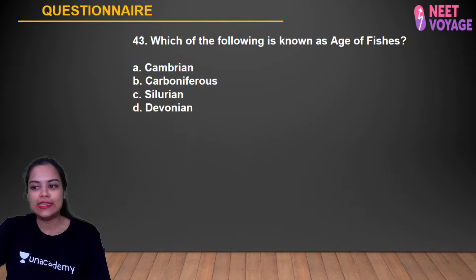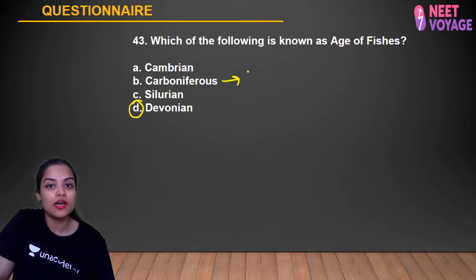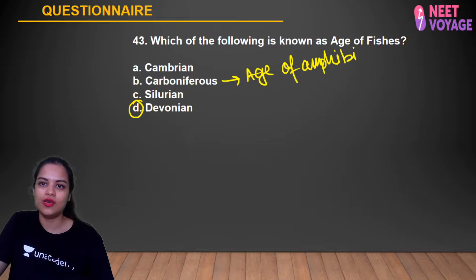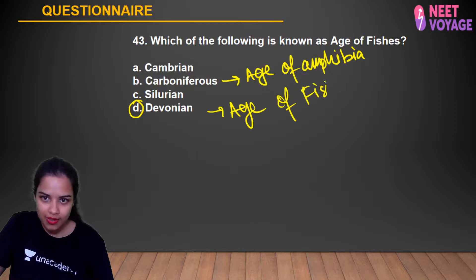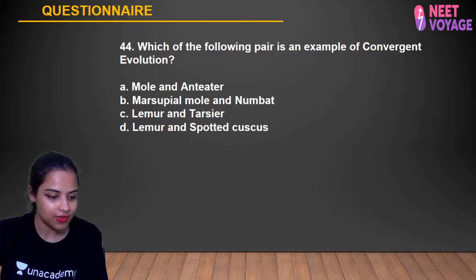Question 43: Which of the following is known as the Age of Fishes? The Devonian period is called the Age of Fishes. The Carboniferous period is the Age of Amphibia. Before Devonian was the Age of Invertebrates. Devonian is the correct answer. Anusha, Sabah, Tanusha, Ritik, Anshika, Shashank, Kamal, Alok gave the correct answer.